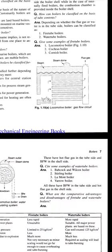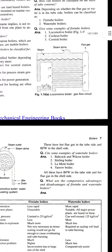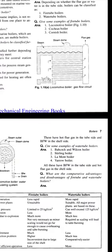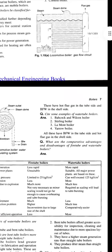The fire tube boiler examples — locomotive boiler, Cochrane boiler, and Cornish boiler — have hot flue gas on the tube side and boiler feed water on the shell side. Examples of water tube boilers include Babcock and Wilcox boiler, Stirling boiler, Lamont boiler, and Arrow boiler.